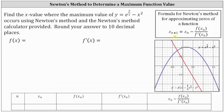In this case, though, this problem is a little bit different. We're looking for the location of the maximum value of the given function, not where it's equal to zero. But remember, if the function does have a maximum value, it will occur at a critical number. Critical numbers occur where the derivative is equal to zero or undefined, which means we will be using y prime for f of x in Newton's method.